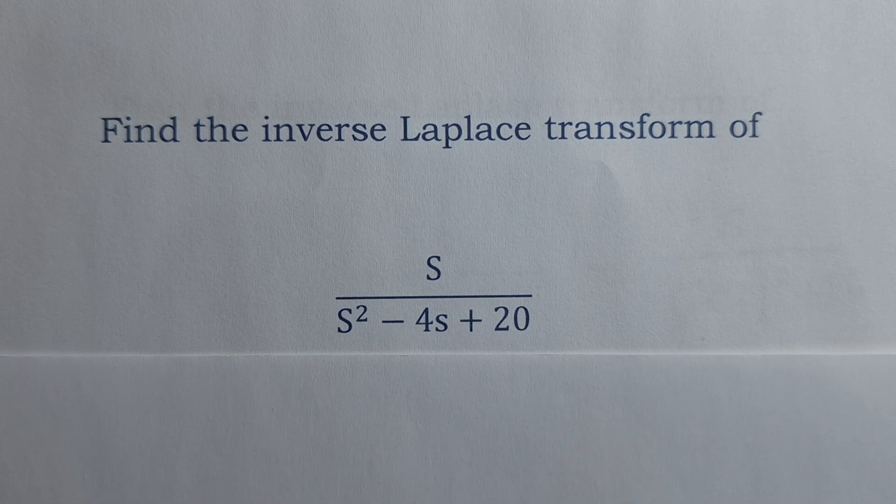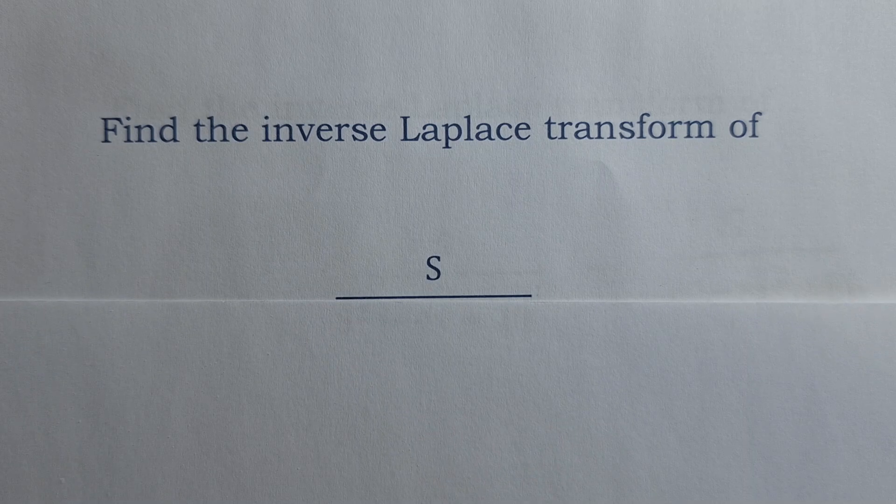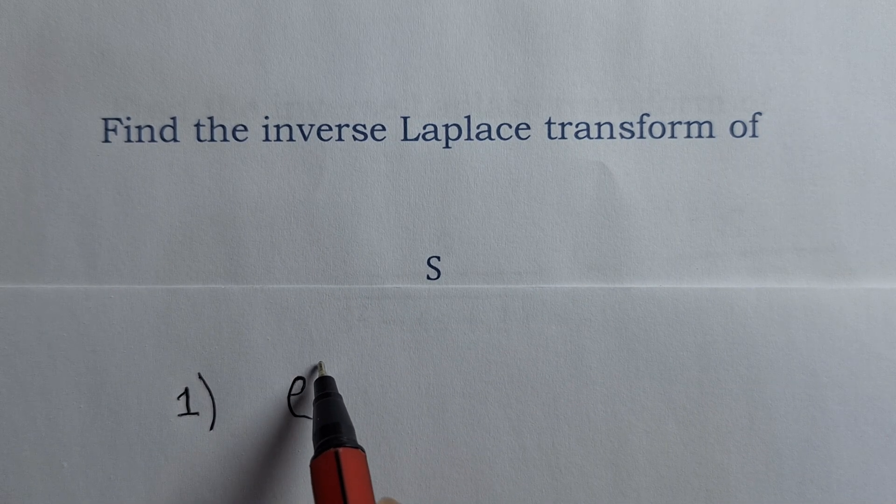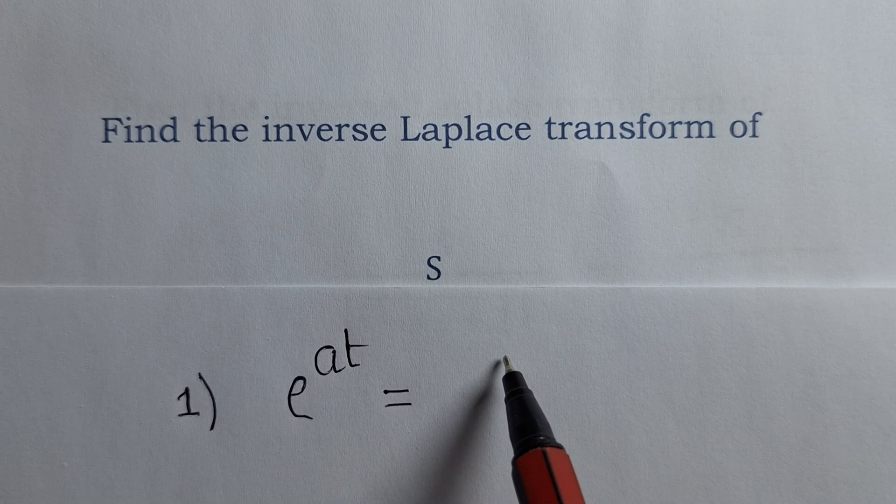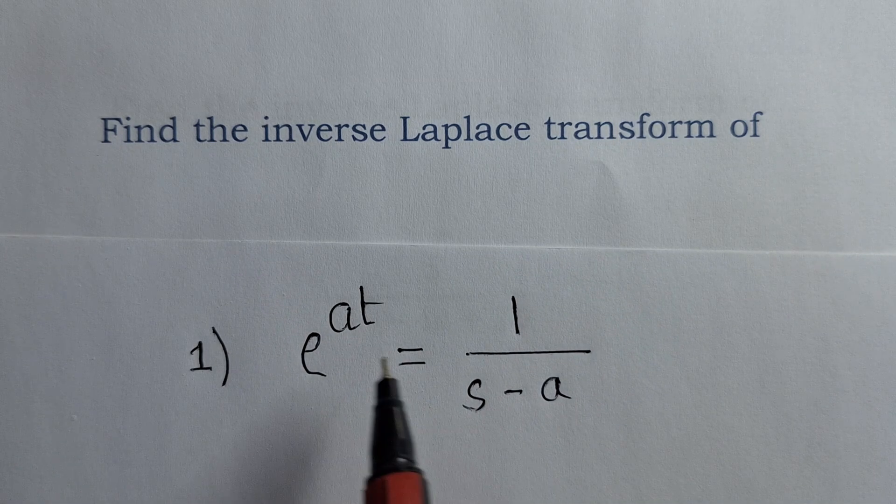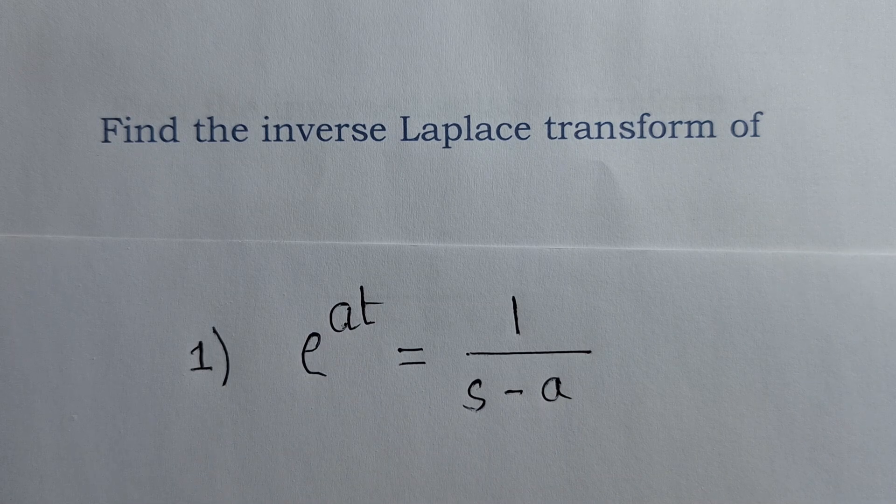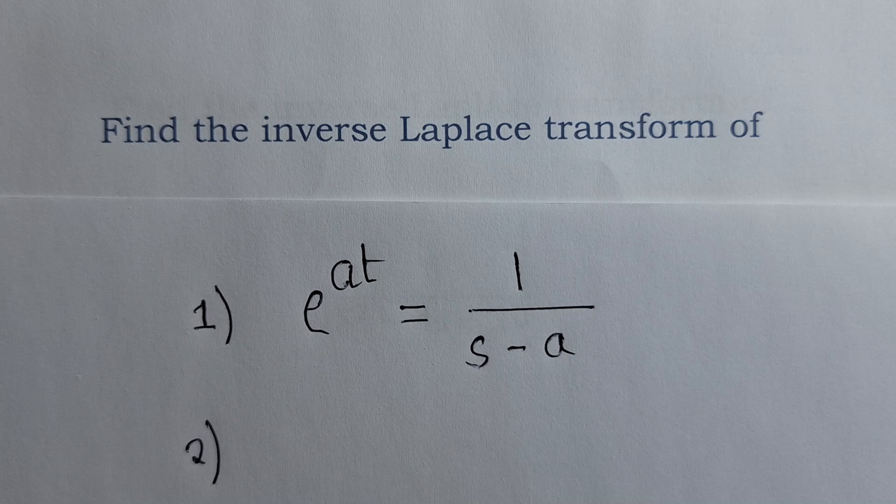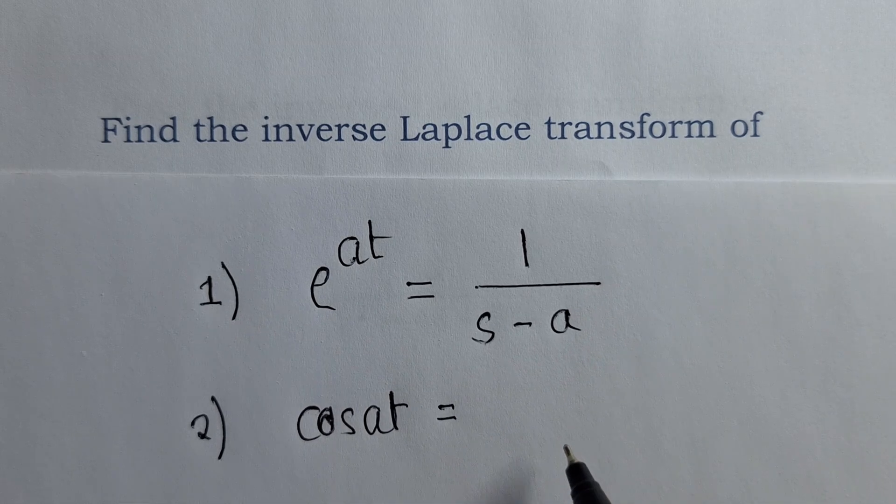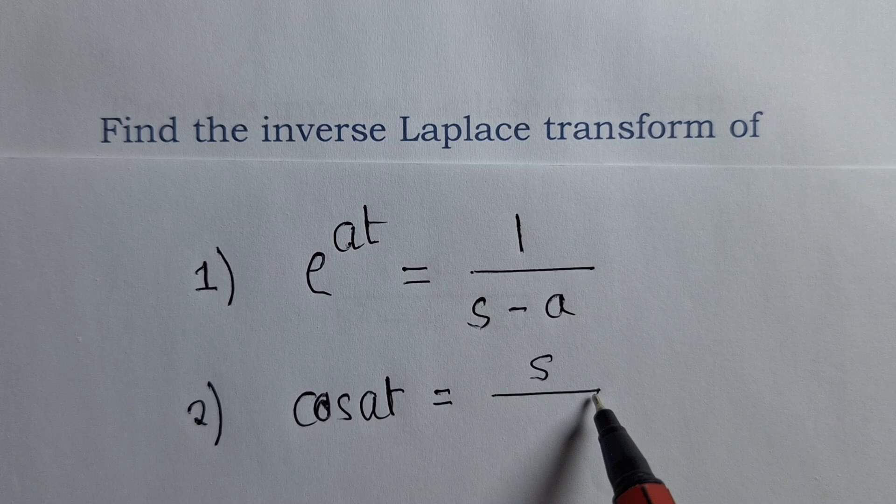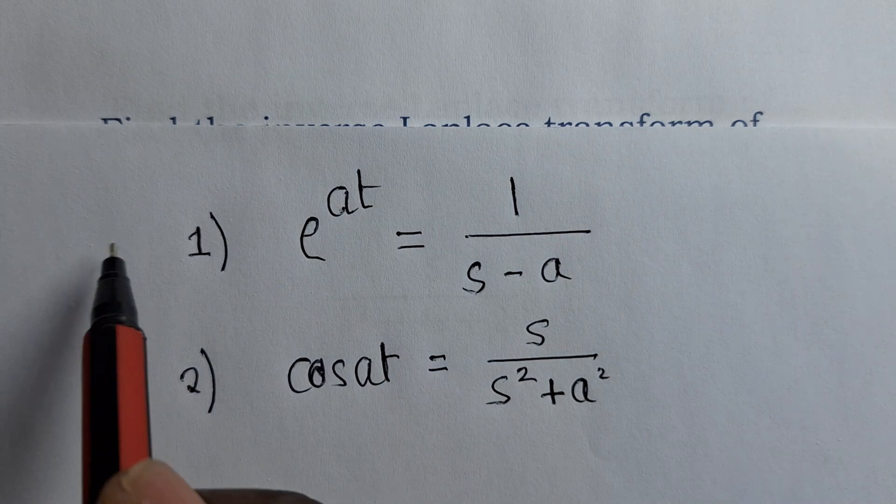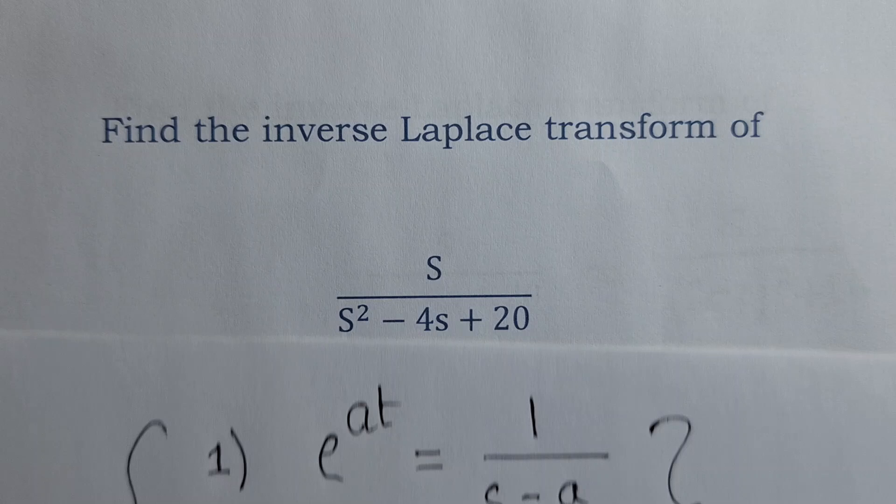We need to find the inverse Laplace transform of S over S squared minus 4S plus 20. To find the Laplace transform of this, we need to know these two properties. The first property says that when you've got e to the power at, this will simply be equal to 1 over S minus a. This is a property we need, and the next property that we need is cos at is equal to S over S squared plus a squared. So these are the two properties you need for you to answer this question.